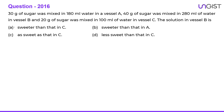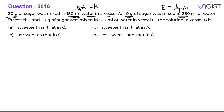The next question: 30 grams of sugar was mixed with 180 ml water in vessel A — so that is one sixth sugar. 40 grams of sugar was mixed with 280 ml in vessel B — so that is one seventh sugar. And 20 grams of sugar was mixed with 100 ml of water in vessel C — so that is one fifth sugar.